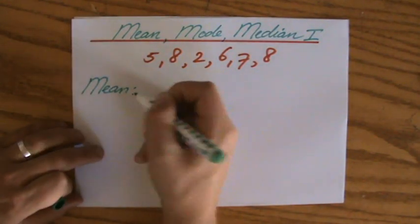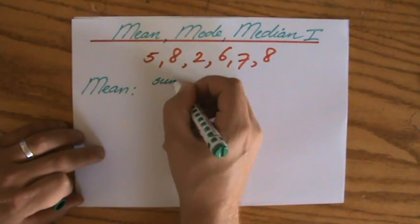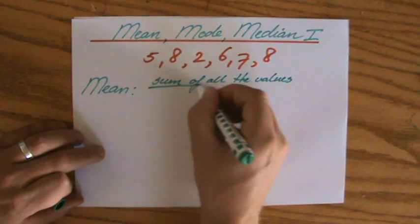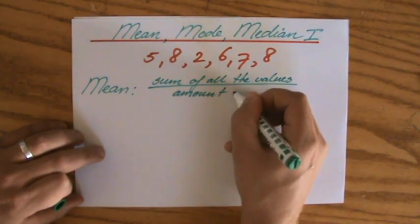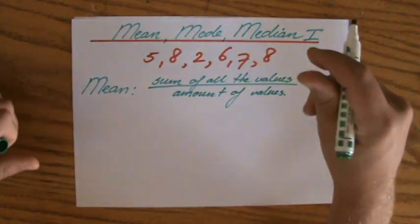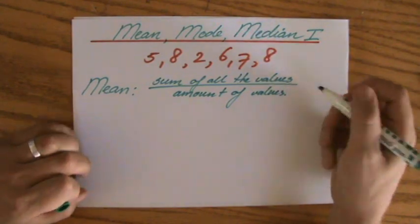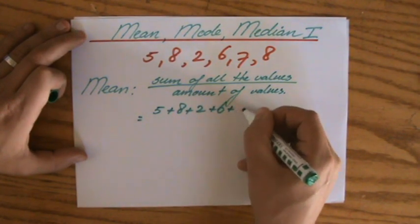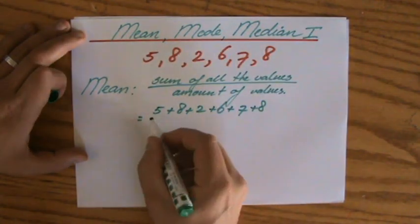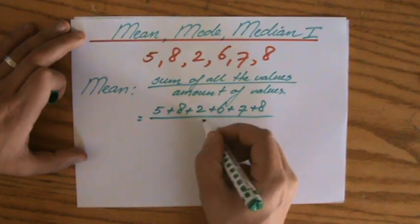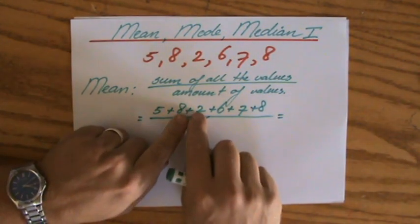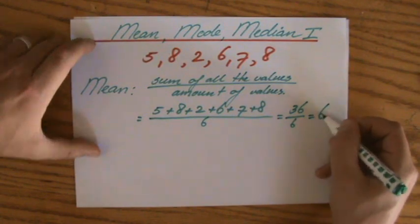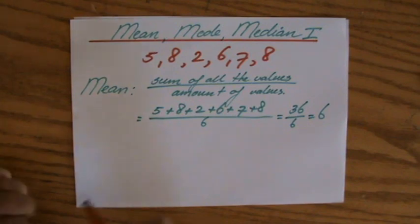The mean, to say something about the average, is the sum of the values divided by the amount of values. This is perhaps the most classic way to calculate the average — you may have used this before. So I do five plus eight plus two plus six plus seven plus eight, the sum of the values, divided by six values. That's thirty-six divided by six, so the mean is six.